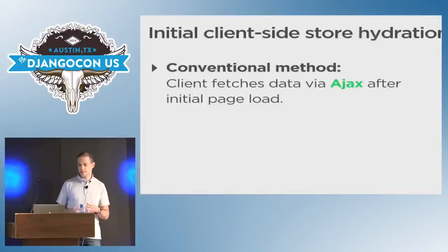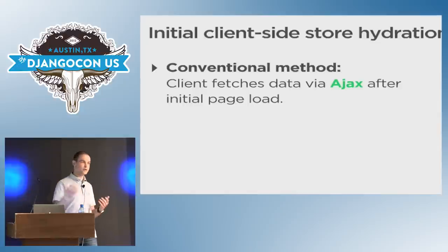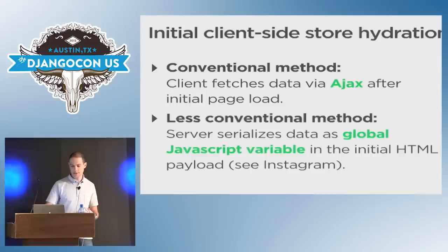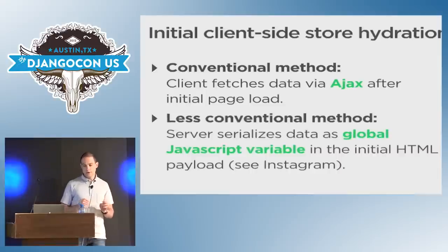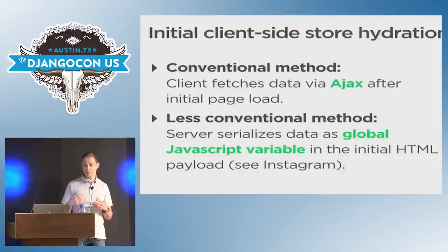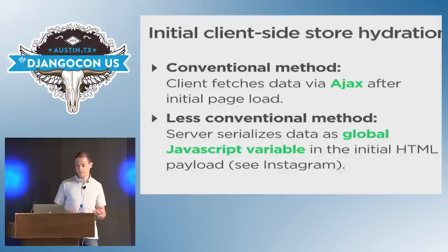I'm going to cover a couple of different methods for the initial data hydration. One conventional method is when the server first returns a pretty much empty HTML document, and then we do another AJAX request just to fetch the data so we can render the content on that page. Another less conventional method is when Django serializes the data and sticks it into the initial HTML document as a global JavaScript variable — that is, for example, how Instagram does it.